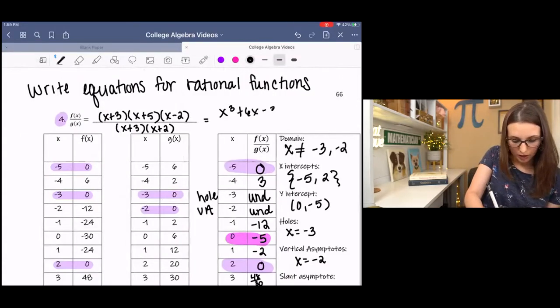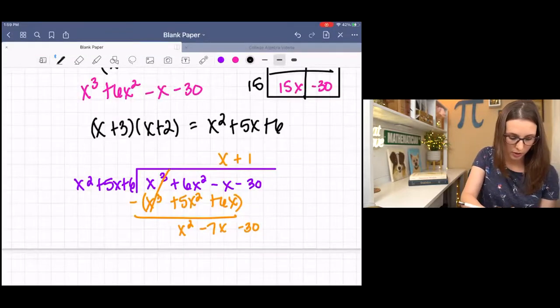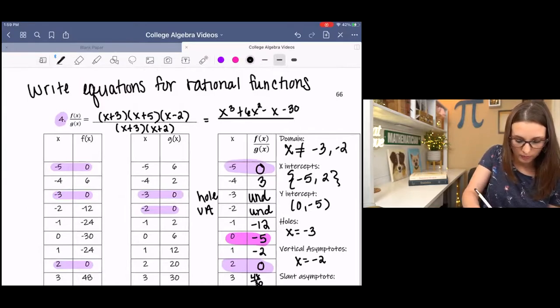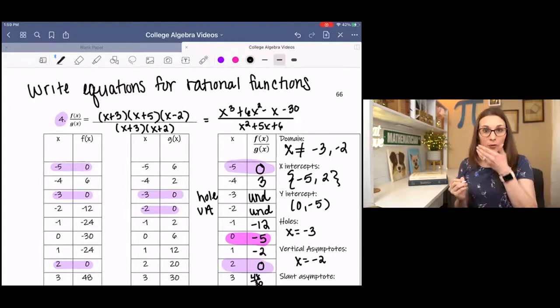We did multiply that out to get standard form. So if you need to do that. I messed up. 6x squared minus x minus 30. Sorry. Then this would be standard form. And that's it for that one.